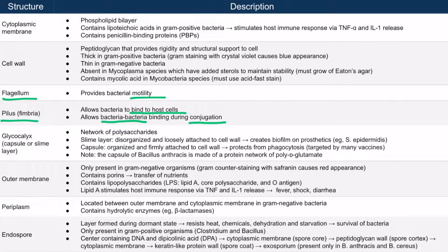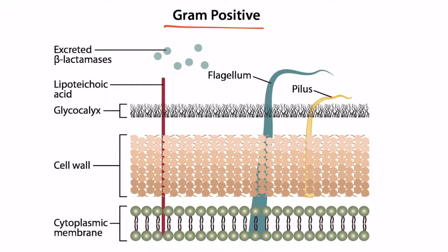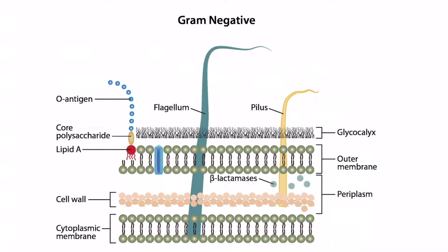This topic will be discussed in more detail in bacterial genetics, which is section three. From this gram-positive figure, you can see the flagellum right here — it extends from the cytoplasmic membrane all the way out to the environment surrounding the cell. You can also see a pilus right here, extending from the cell wall out to the environment. Looking at our gram-negative image, we can see the same thing: the flagellum and the pilus.